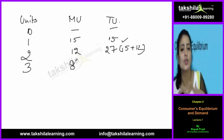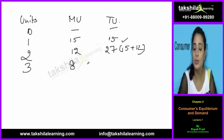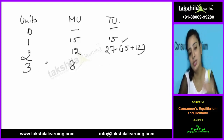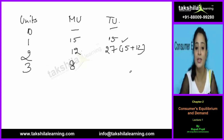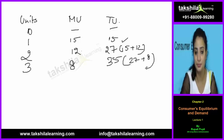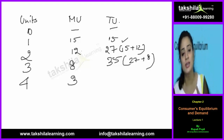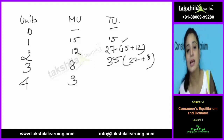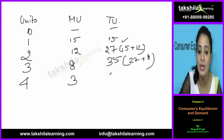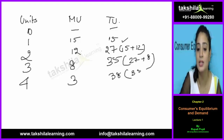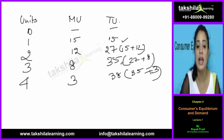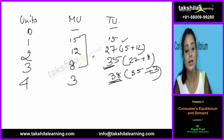At the third unit, MU falls further to 8, giving total utility of 27 plus 8 = 35. At the fourth unit, MU is 3 utils — satisfaction is almost diminishing. Total utility becomes 35 plus 3 = 38. So total utility at every level is the sum of all marginal utilities above that level.